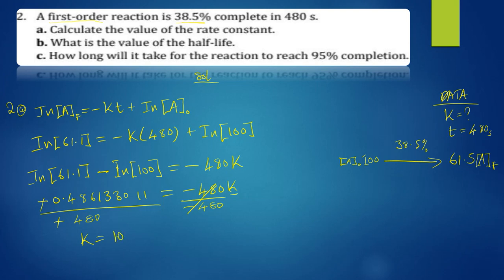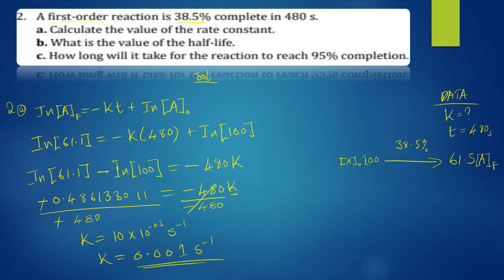The rate constant k works out to approximately 1.0 × 10⁻³. The units for a first-order rate constant are s⁻¹, which can also be written as 0.001 s⁻¹. Each reaction order has its own units for k, which I explained in the video. That's how you solve part (a).